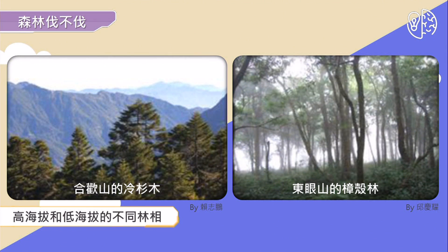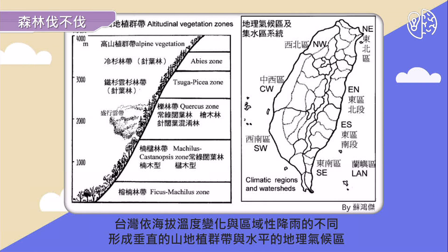台湾的最高海拔将近4000公尺，如果你要看到比较完整的台湾各种不同的林型，可以走一趟中横公路。早在30年前，台大森林系松杰老师就曾经利用海拔高山的温度变化，把台湾不同海拔高度的植群做了划分，包括所谓的龙岸林带、南楚林带、利林带、铁杉云杉林带跟冷杉林带，在这么小的岛屿里面就拥有这么多不同的林带。